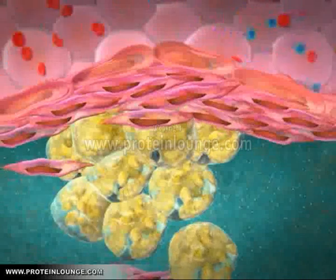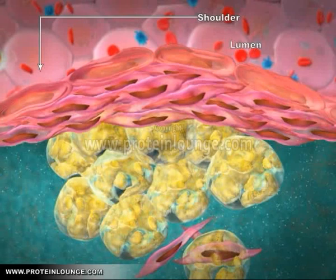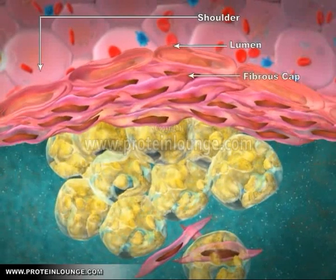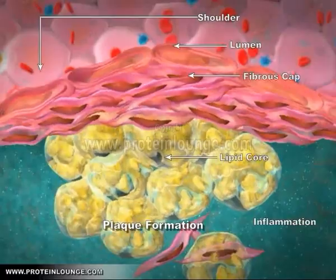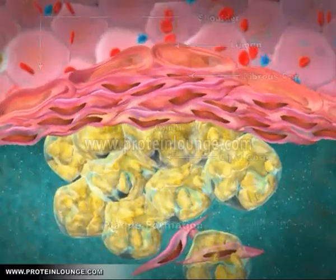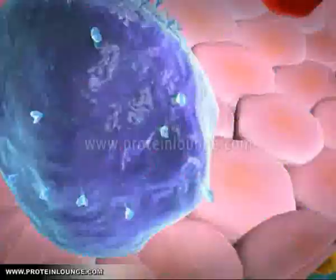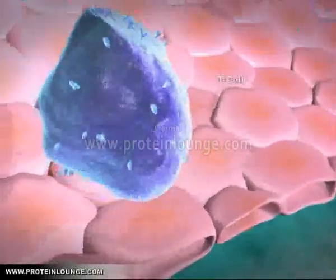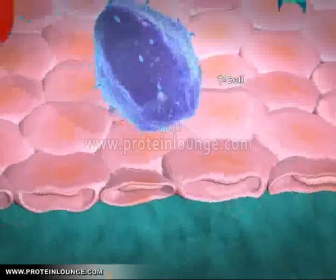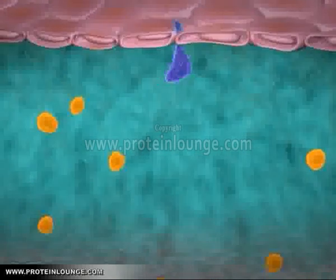Plaque formation occurs with the formation of the shoulder, lumen, fibrous cap, and lipid core, causing inflammation. Along with this process, T cells also penetrate.